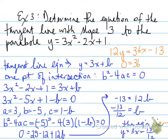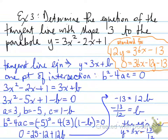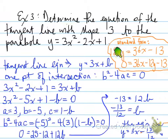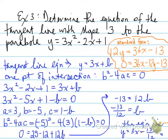One last note: not always is the equation required in slope-intercept form — sometimes you'll need to express it in standard form. To convert, take the slope-intercept equation, multiply through by the common denominator (in this case 12), then move everything to one side so that the x term is positive. That gives the standard form equation.